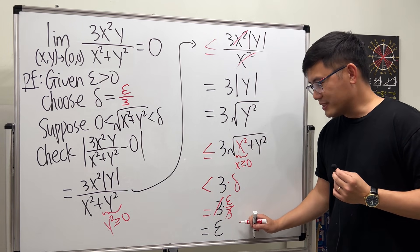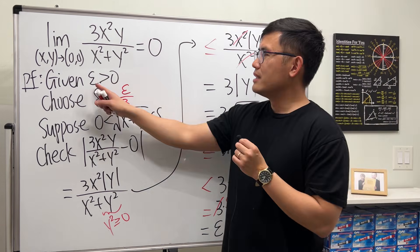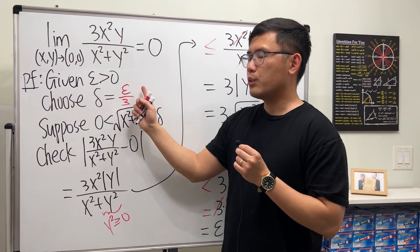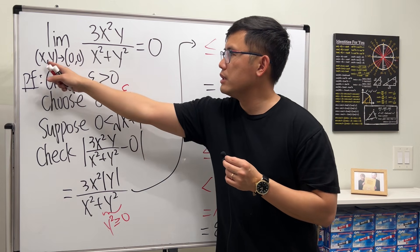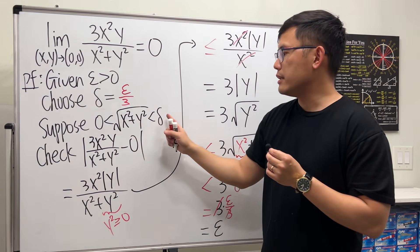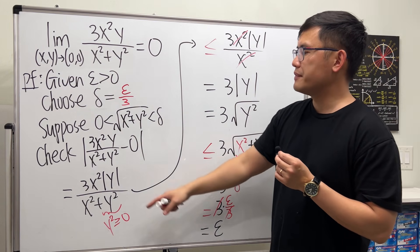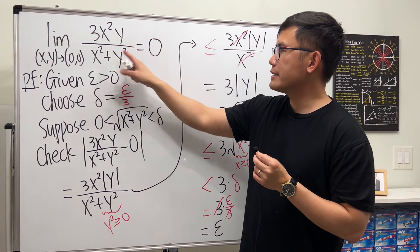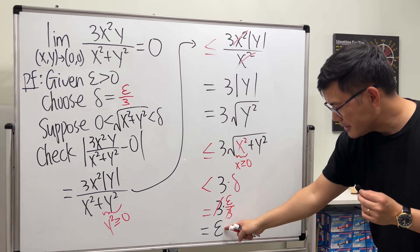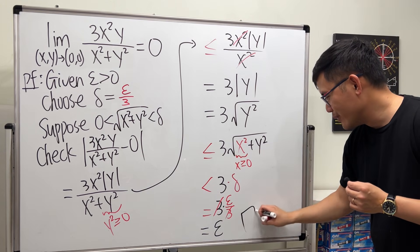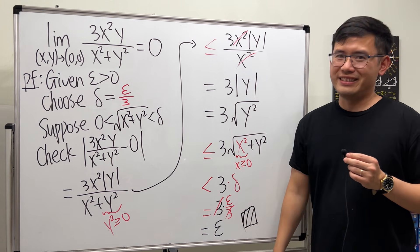Delta is the same as epsilon over 3. So, it's equal sign. And then, as you can see, given epsilon greater than 0, we have this delta, which is epsilon over 3. Once we have the distance between this and that is between 0 and delta, then we will have the absolute value of this minus that being less than epsilon. So, ladies and gentlemen, we are done.